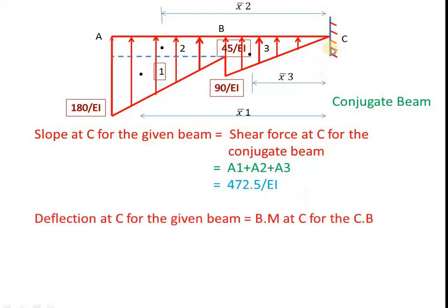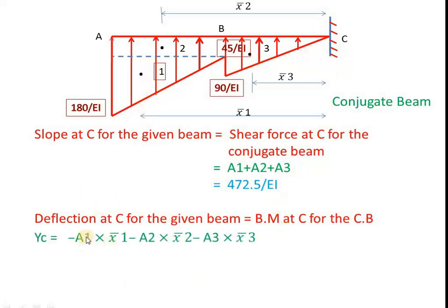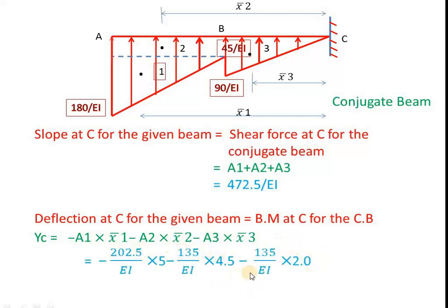To get the deflection at C for the given beam, we calculate the bending moment at C for the conjugate beam. Since the areas act upward (negative bending moment), YC = minus A1 × x1 bar minus A2 × x2 bar minus A3 × x3 bar. We have already calculated all A and x values. Substituting gives YC = minus 1890 by EI. This is the deflection at C for the given beam, equal to the bending moment at C for the conjugate beam.